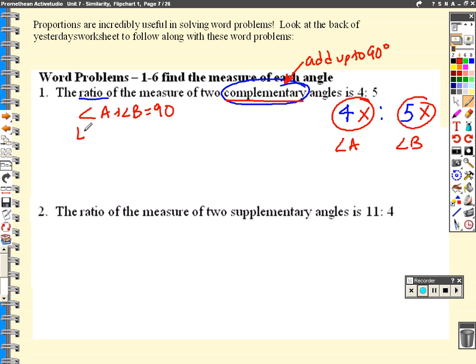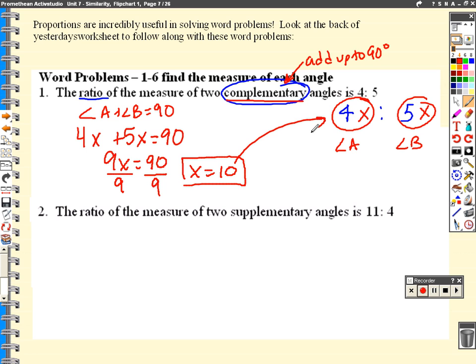So if I was to write a little situation here, I'd say angle A plus angle B is 90. And now subbing in what we know for each, 4x plus 5x is equal to 90 degrees. 4x plus 5x is obviously 9x equals 90. Divide both sides by 9. And that allows us to find that the thing that we crossed out that they had in common was 10. So if they both had 10 in common, let's put it back. And that tells us that angle A must be 40 degrees. And angle B must be 50 degrees.